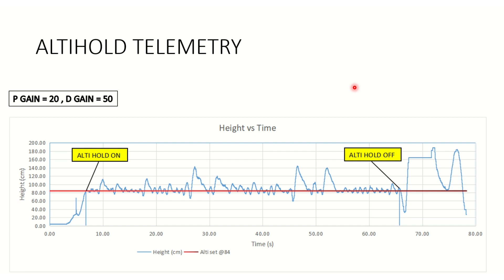We'll end today's video with a quick walkthrough of the data captured via Bluetooth on my laptop. What you can see on the screen is the altitude-hold telemetry — I'm capturing height versus time. The blue graph is the height changing with respect to time, and the straight red line is the target height of 84 centimeters which I had requested the drone to hold.